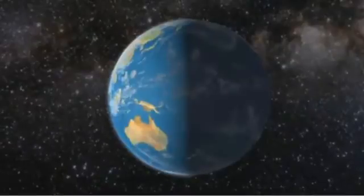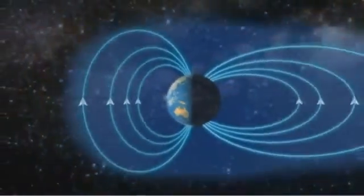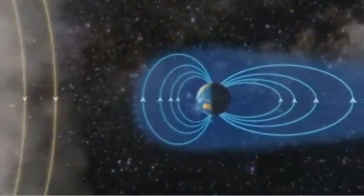When the solar storm reaches our planet, something strange happens. An invisible shield, the Earth's magnetic field, deflects the storm.